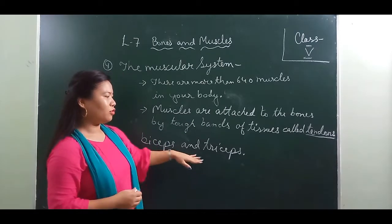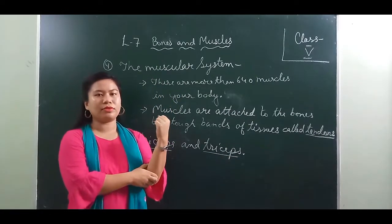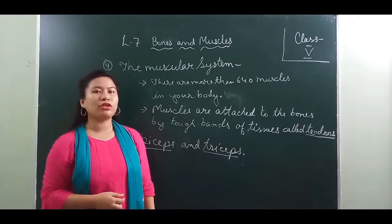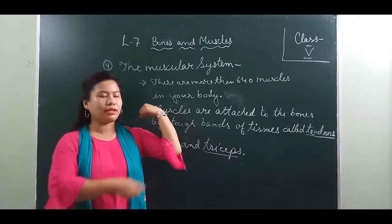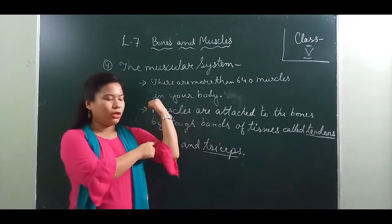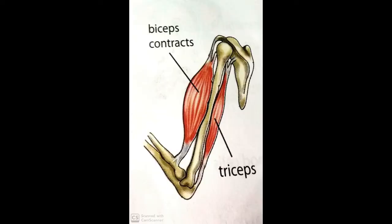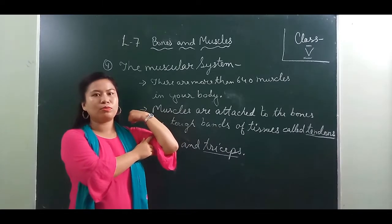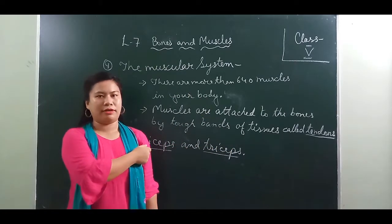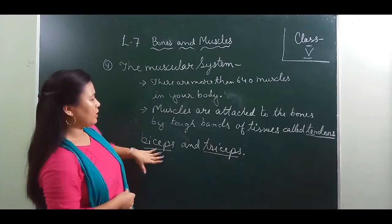Muscles are attached to the bones by tough bands of tissue called tendons. Muscles can only pull at the bones — they cannot push — so at least two muscles are needed to move a bone. For example, the biceps and triceps work together to move the lower arm. When you raise your arm, the biceps contracts and pulls it up; when you lower it, the triceps contracts and pulls it down.